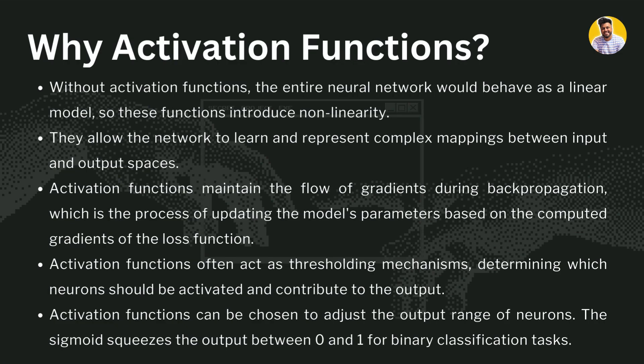Activation functions make the neural network learn and represent complex mappings between input and output spaces. They also maintain the flow of gradients during backpropagation, which is the process of updating model parameters based on computed gradients of the loss function — as we discussed in our previous video about how feedback loops work.